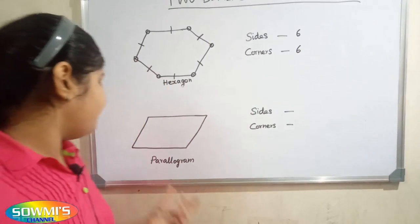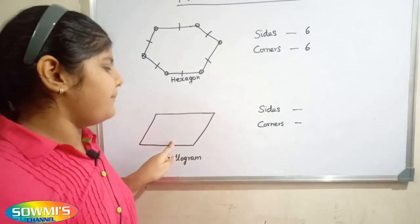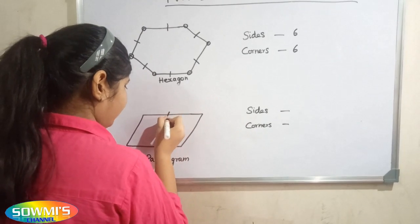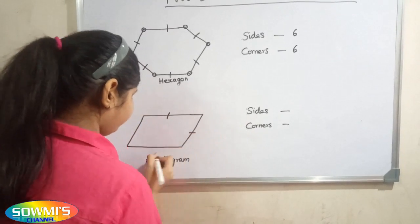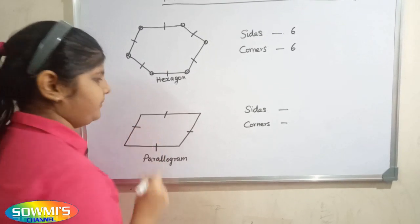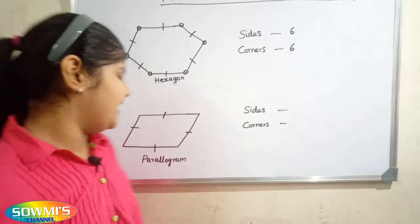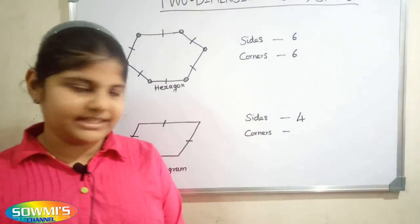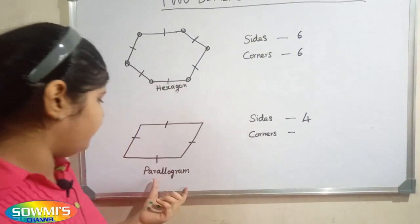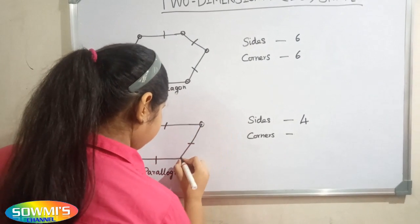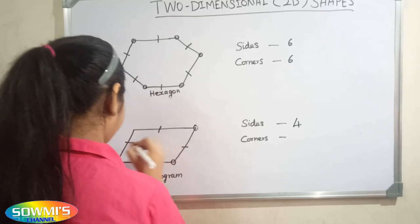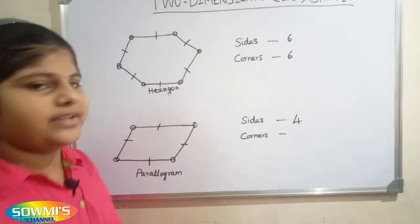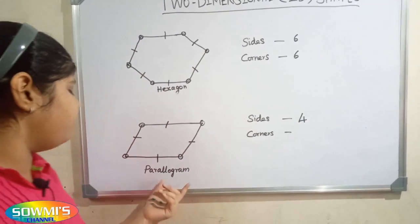Next we will take a parallelogram. First we will count the sides: 1, 2, 3, 4 — there are four sides in a parallelogram. Next we will count the corners: 1, 2, 3, 4 — there are four corners in a parallelogram.